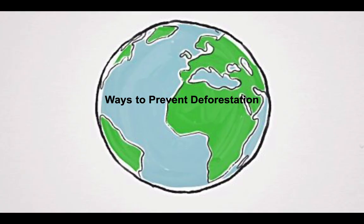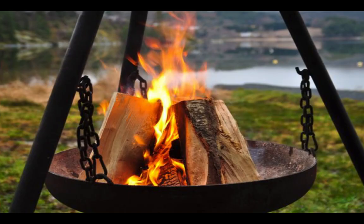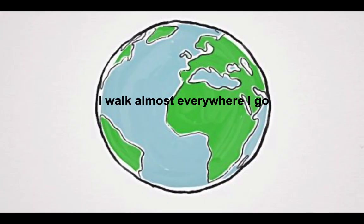Now, how can we prevent deforestation? First, we can buy products that don't have palm oil in them. Products that do contain palm oil — such as fast food from McDonald's, Doritos, or ramen noodles — require ingredients from certain trees. When those trees are cut down for palm oil, it causes deforestation. We can also reduce our use of firewood. Personally, I avoid palm oils as much as possible and walk almost everywhere I go, trying to reduce how much I use my car.